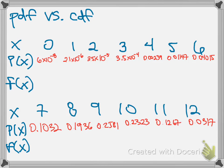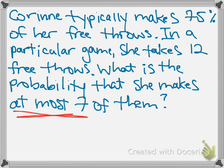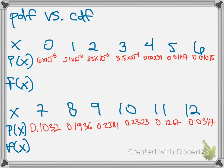We still haven't answered our question: what is the probability she makes at most 7 of her shots? To do that we need to calculate the cumulative density function. The CDF simply takes all the values from the PDF and adds them up. Our first CDF entry is the same as the probability of getting 0 makes — 6 times 10 to the negative 8th. Then for each subsequent value, we keep summing: the CDF for making 1 shot adds the results for 0 makes and 1 make, giving 2.2 times 10 to the negative 6th. I'll go ahead and fill in the rest of the chart.